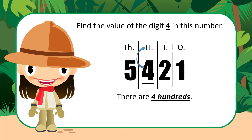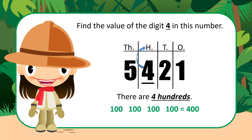And what does 4 hundreds look like? Instead of doing all of that adding, let's just use our fingers and count by hundreds: 100, 200, 300, 400. So the value of the 4 in this number is 400.